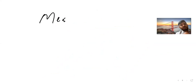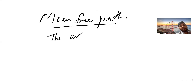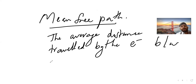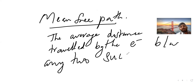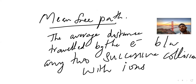The next thing is mean free path. Mean free path is the average distance traveled by the electrons between any two successive collisions with the lattice ions. The ions referred to here are the lattice ions before collision.